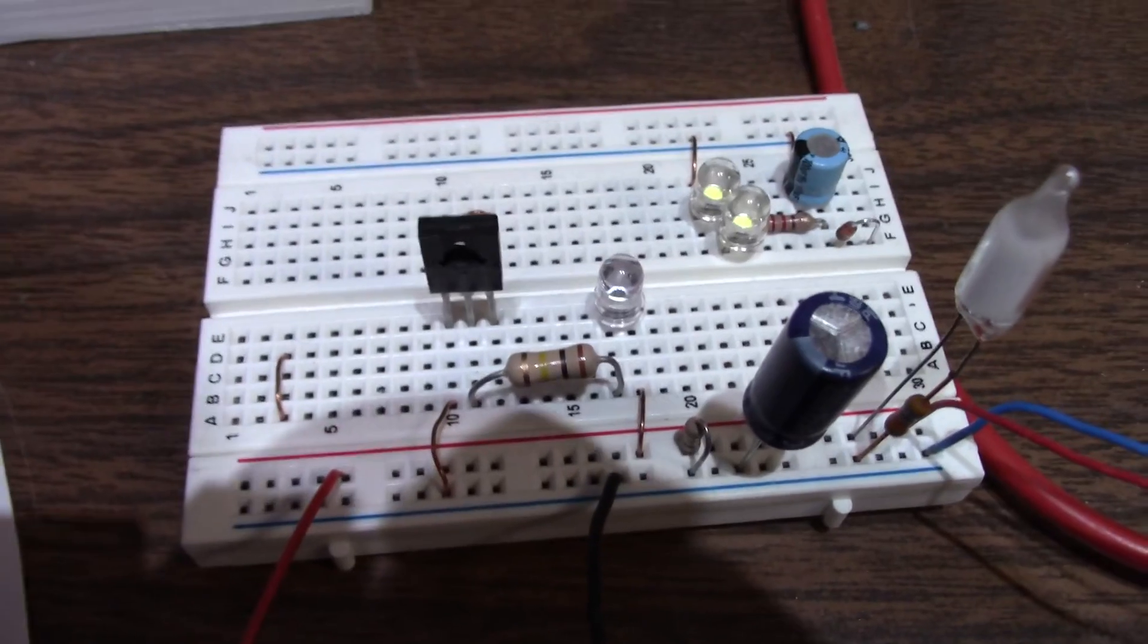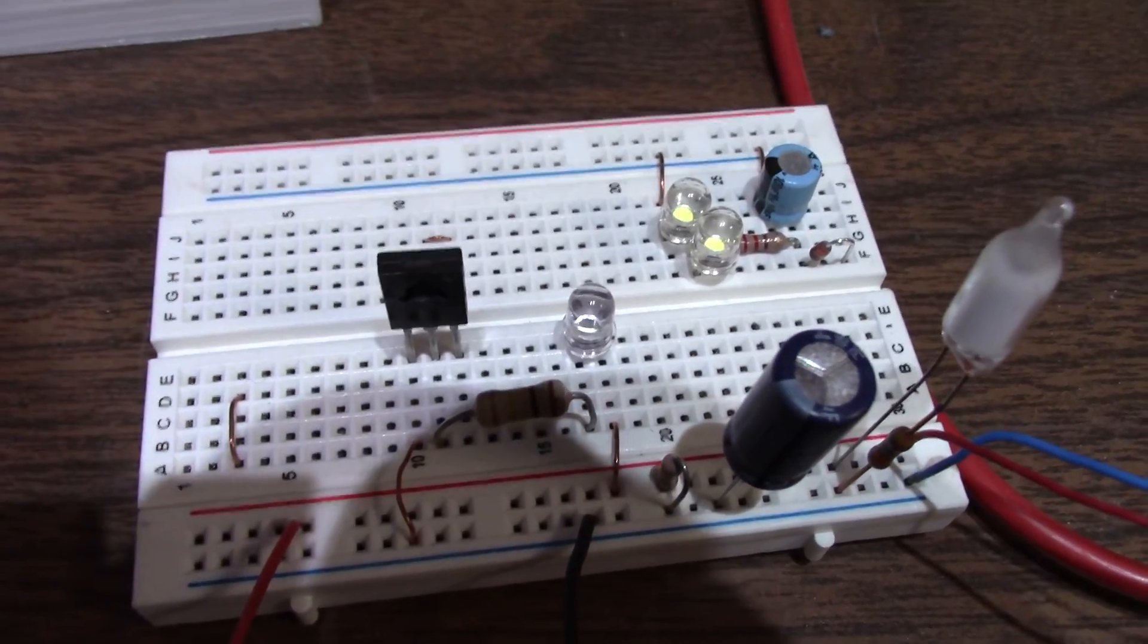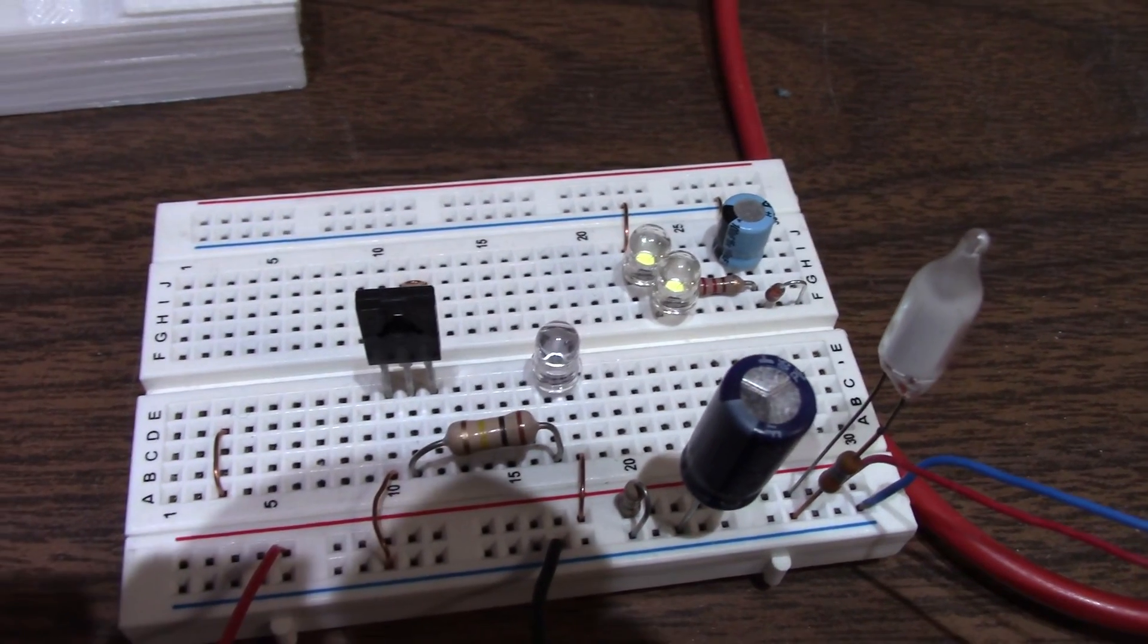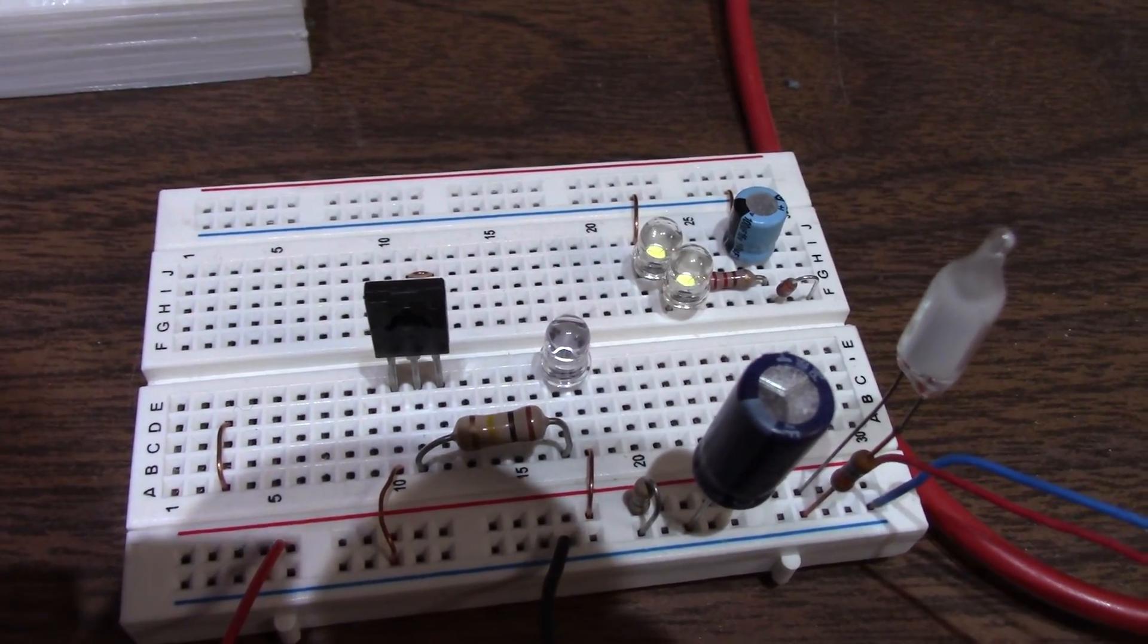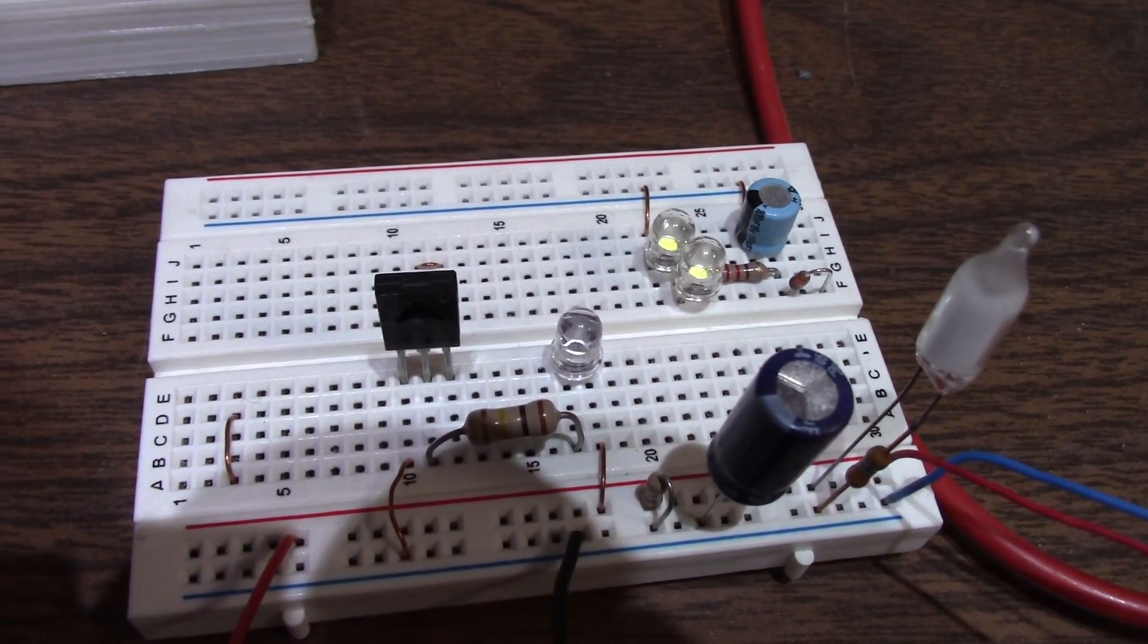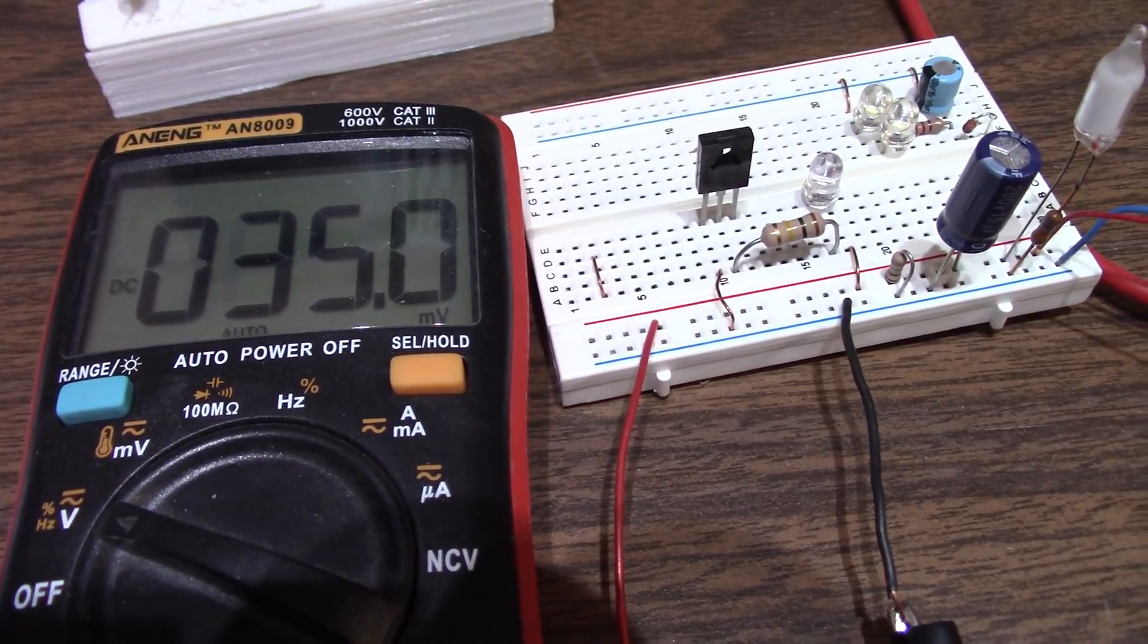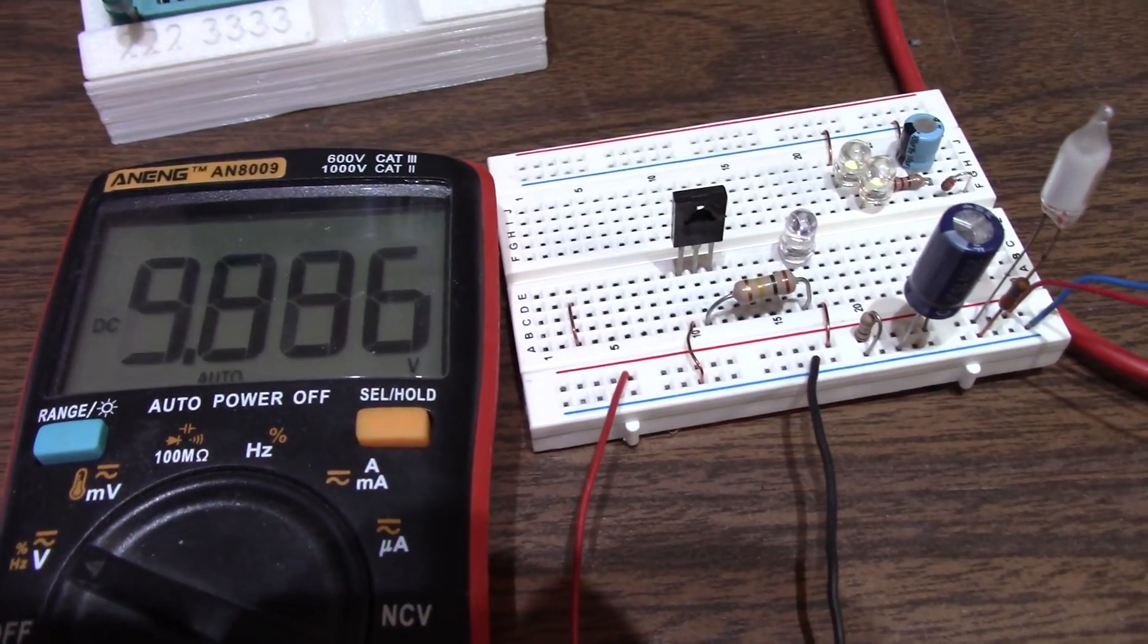So, well, let's see what happens. This is the BD139 transistor. Let's see when the little LED comes on. Okay, we're rolling here. We got 35 volts. Let's crank it up. I guess that was millivolts.